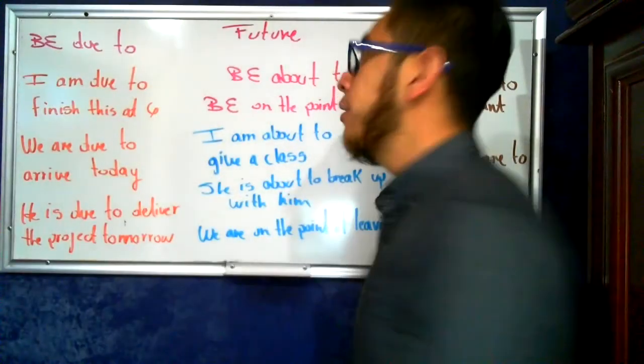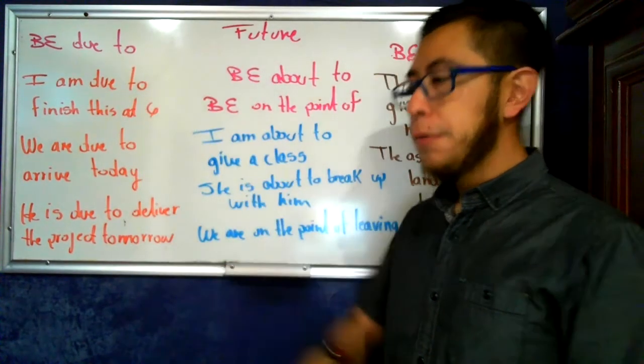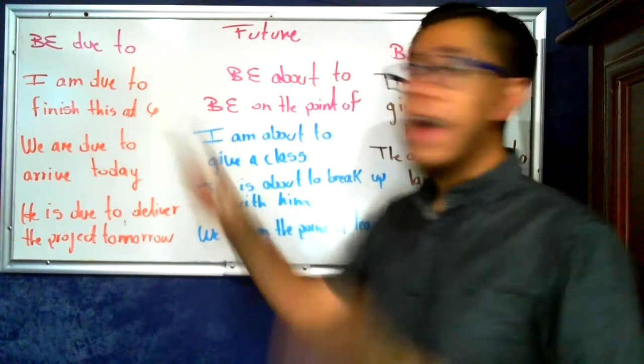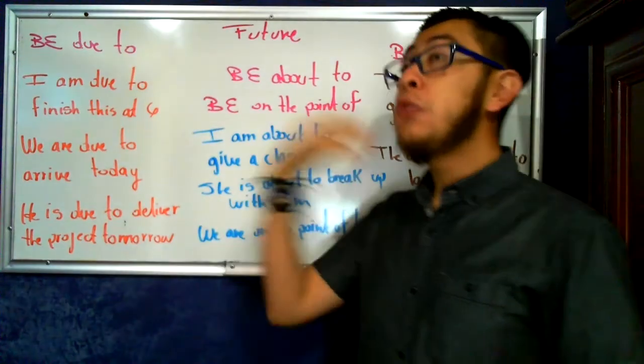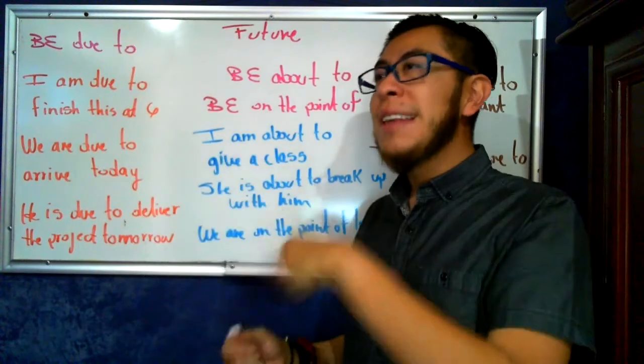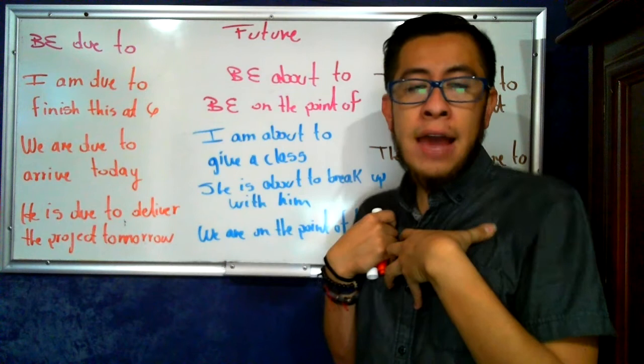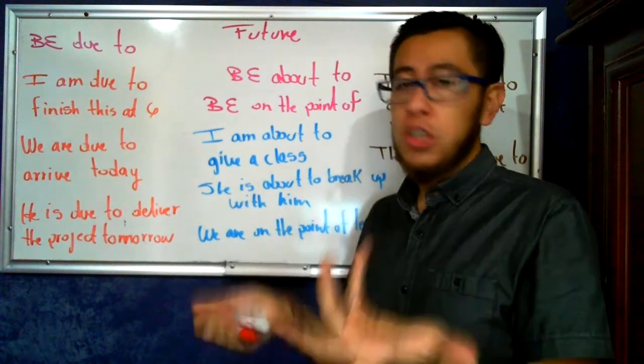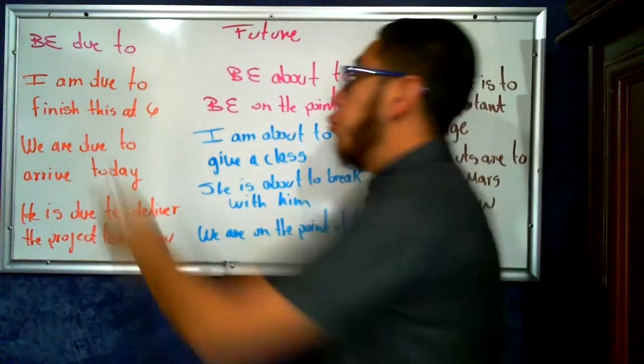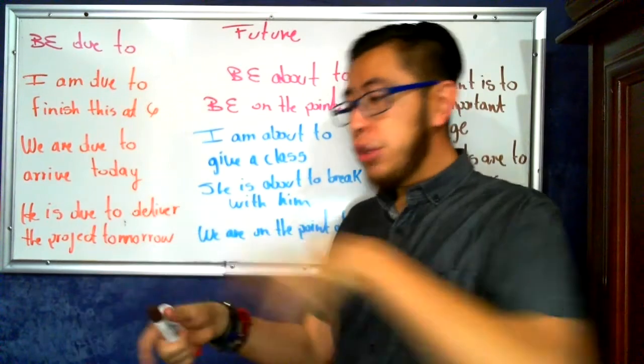The first one, be due to. It's used to express future ideas that probably they are arranged, they are set. For example, I am due to finish this at six. So it means it is supposed that I have to finish at six. It is like a plan. It's like, if I'm talking about a plan. I planned. I already planned to finish at six. So I can say that I am due to finish this at six. For example, we are due to arrive today. According to the plan, according to the schedule, it's supposed that we are going to arrive today.